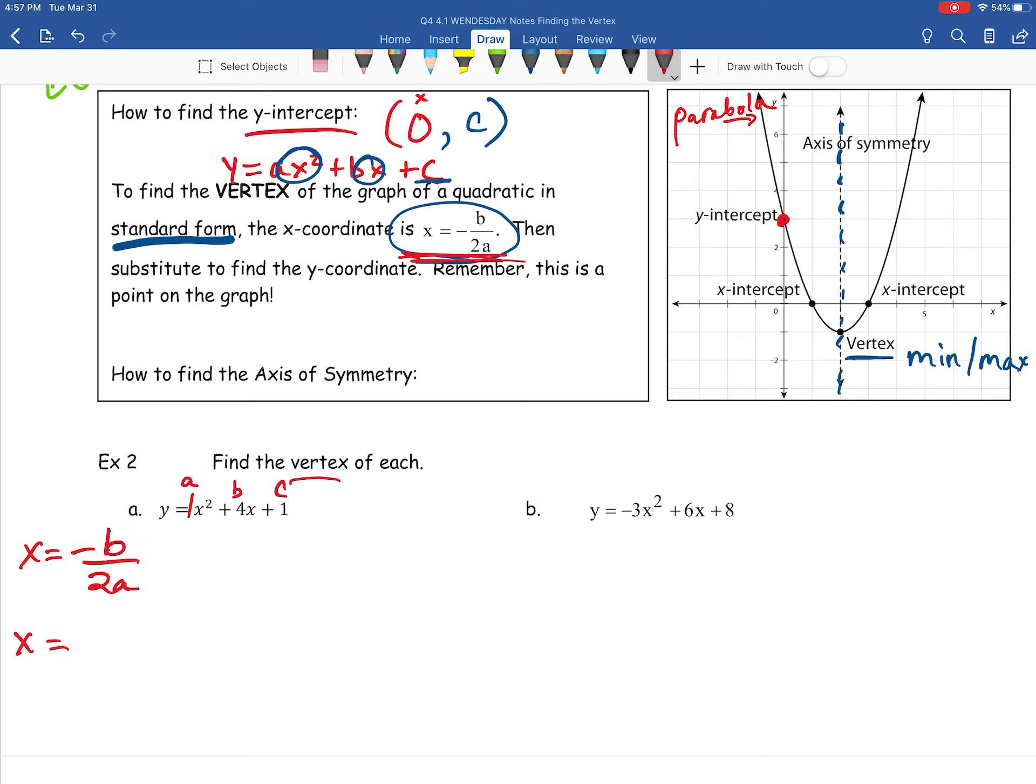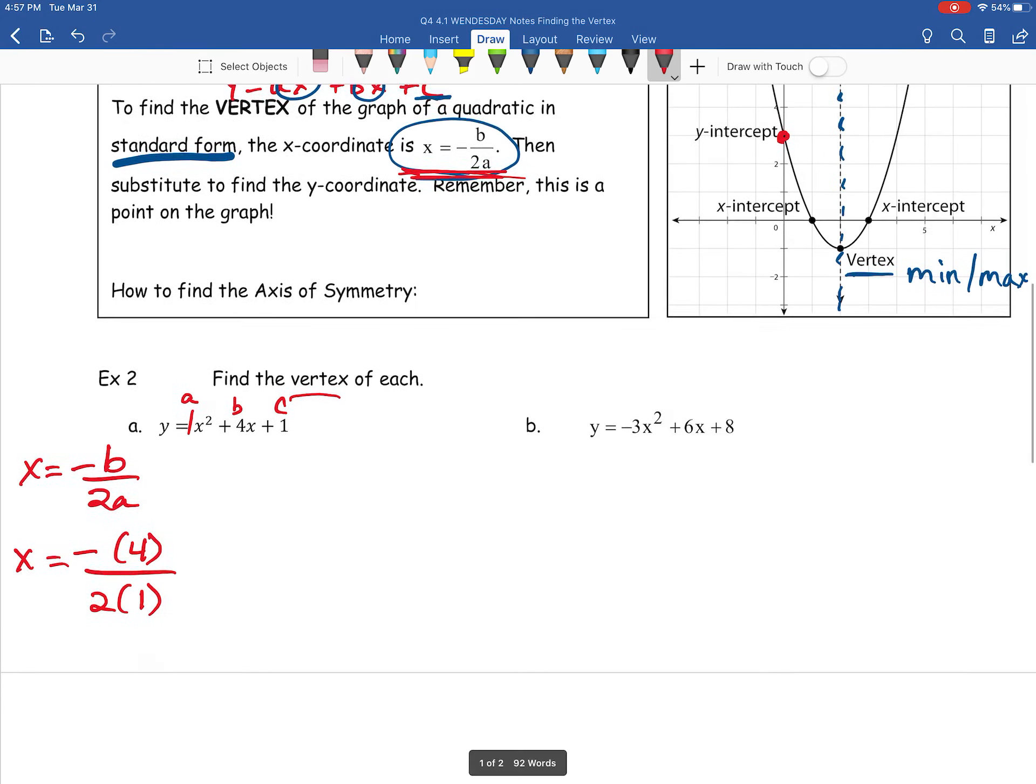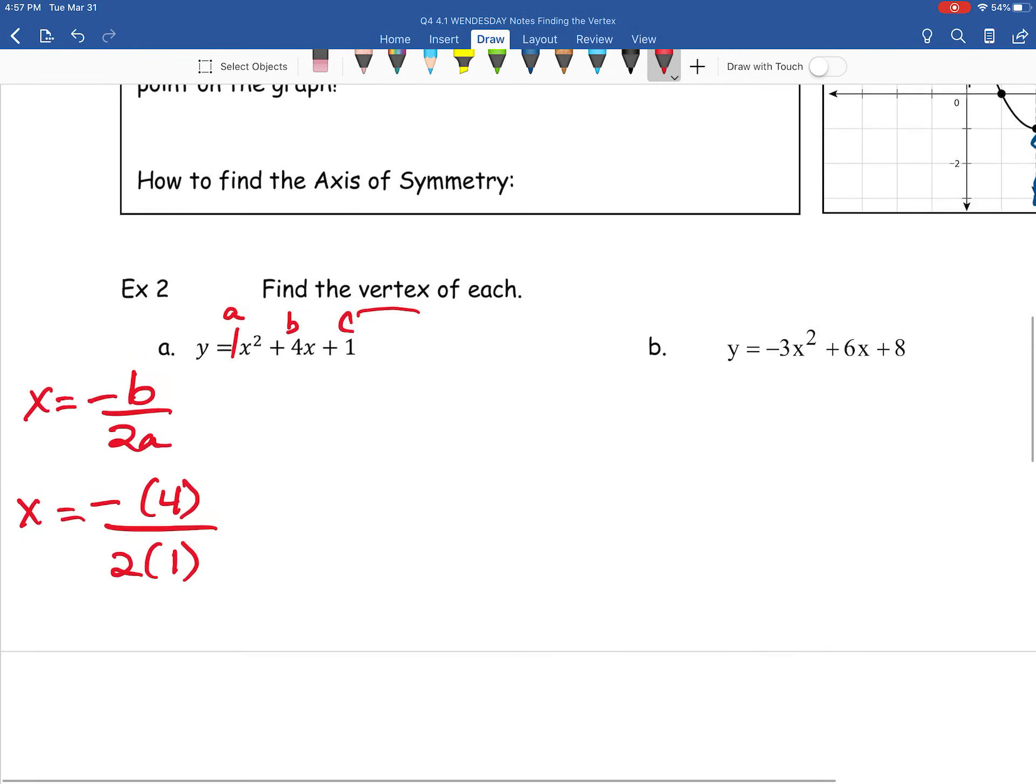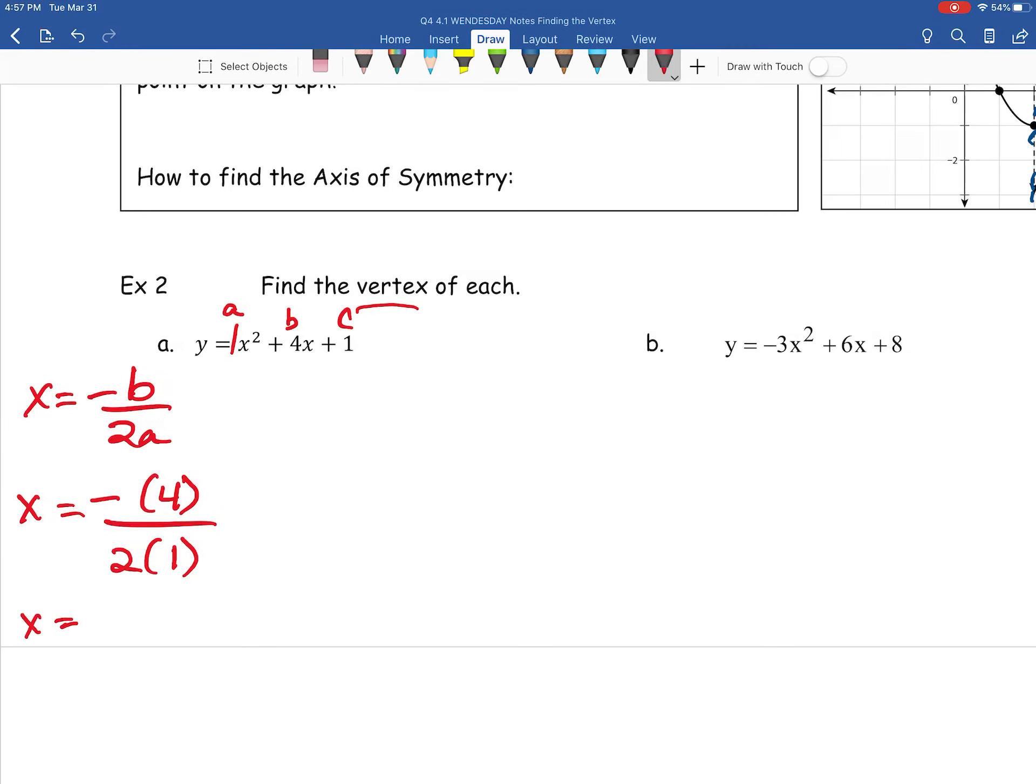Then x is equal to, all we're going to do now is just plug in our values. As we can see, we have the opposite of b. In this case, we determined that it was 4. All over 2 times our a value. In this case, we see that a is 1. Now, simplifying things up a little bit, we end up with x equals negative 4 over 2 times 1 is 2. And so, when you divide, you get x equals negative 2.